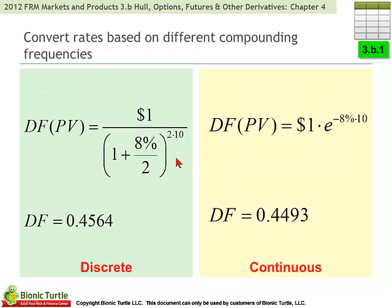We can observe the difference here with an example. We take a rate — say 8% per annum. Notice that reading '8% per annum' in a word problem doesn't really tell us the compound frequency. Over here, we take $1 received in the future — in this case, 10 years in the future. $1 received in 10 years, discounted at an 8% per annum rate, semi-annually or twice per year. This is how we would discount that discretely.